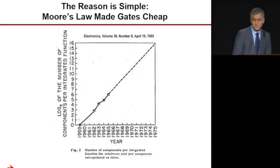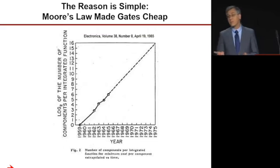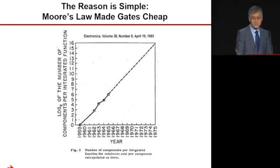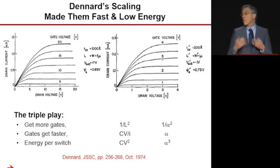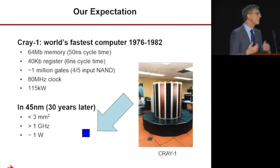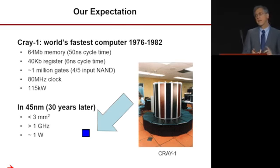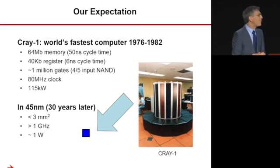We don't have computers in everything because we want to put computing everywhere — we have it because computing is just incredibly cheap. That can be explained by two simple laws: Moore's Law, which said we can make the devices we build computers out of increasingly inexpensive over time, and Bob Dennard's scaling rule, which said that these gates also become faster and much more energy efficient.